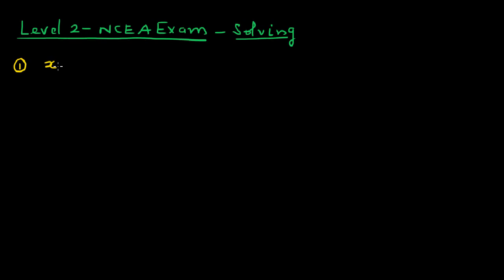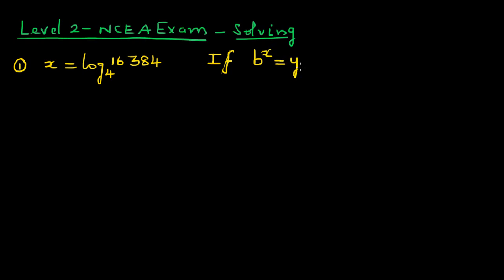Say X is equal to log base 4 of 16384. You need to know the log rules. The log rule — the foundation of log — is like this: if B to the power X is equal to Y (this formula is given in your formula sheet), this implies log base B of Y is equal to X. I like to remember it like a wedge: B raised to X is equal to Y, and these two forms are equivalent.